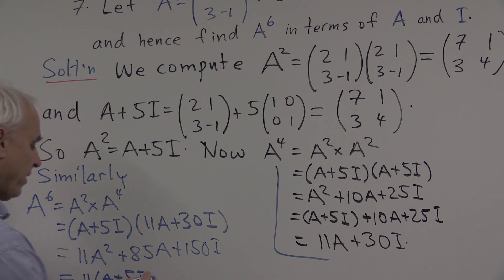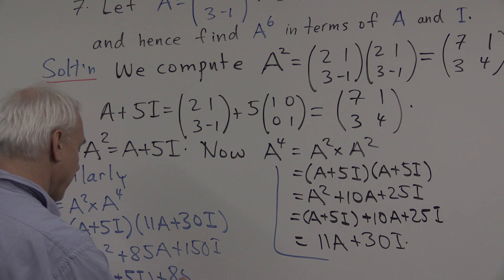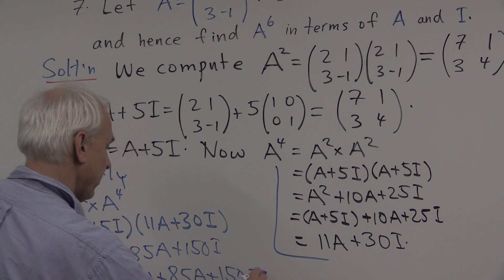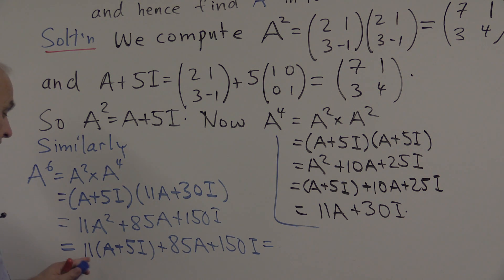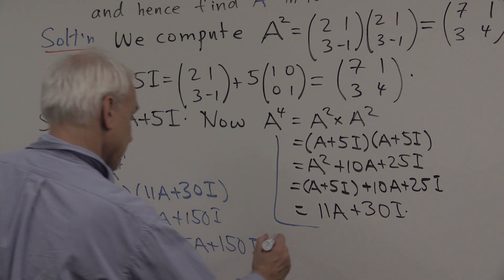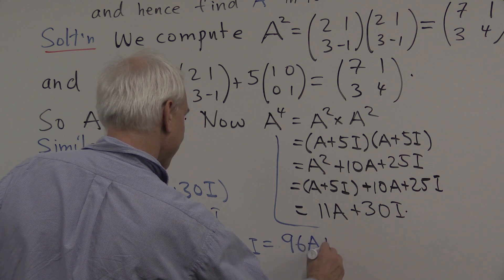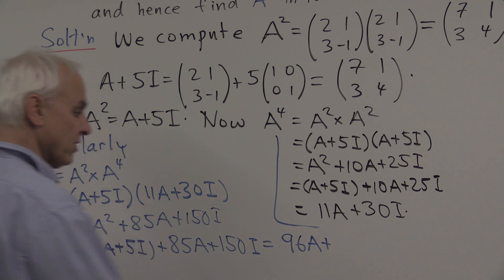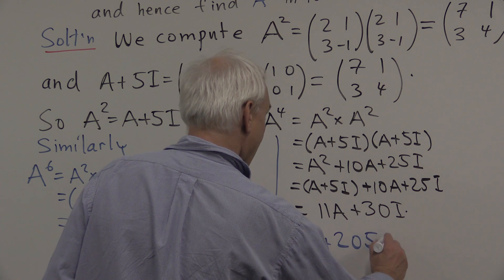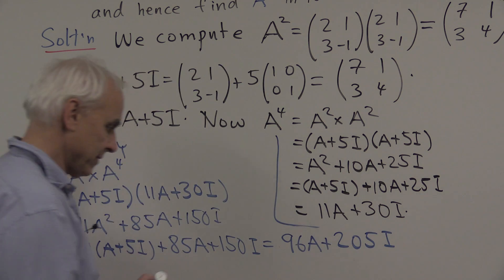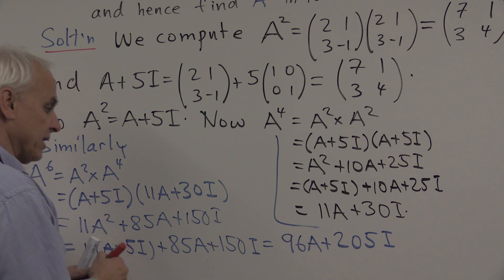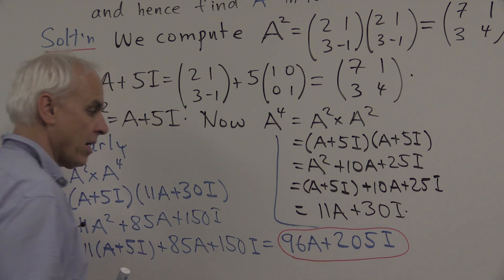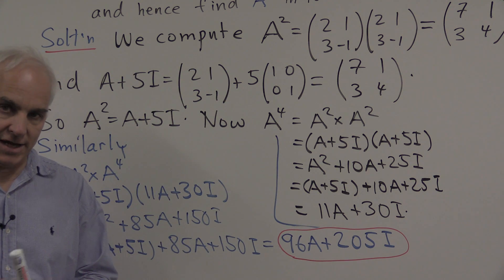And we have 85A over here and 150I over here, which is altogether 11A plus 85A is 96A. And altogether, 55I and 150I is 205I. So that's an expression for A to the sixth just in terms of the identity I and the original matrix A itself.